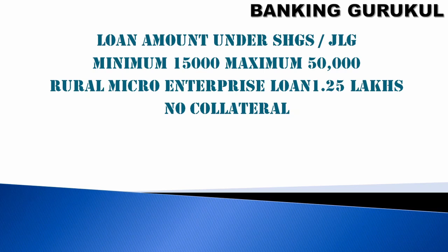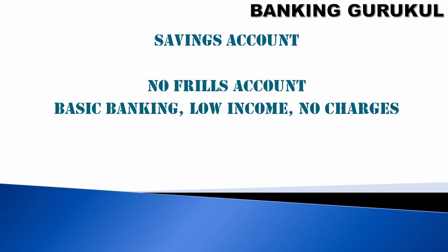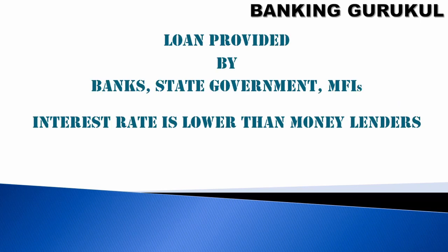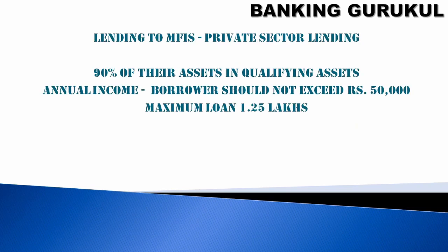Banks can offer no-frills accounts to self-help groups or joint liability groups. These accounts support basic banking like cash deposit, cash withdrawal, and fund transfer, and are provided to low-income groups with minimal or no charges. Loans can be provided by bank staff, state government, or microfinance institutions. The interest rate is lower than that of money lenders, who may charge 30–50% per annum with many conditions, whereas all microfinance loans carry lower interest rates. Lending to microfinance is considered private sector lending.